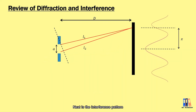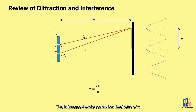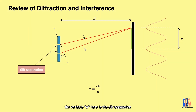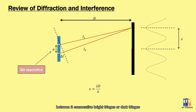Next is the interference pattern. We also have a similar formula and we do not consider the angle of diffraction in this topic. This is because the pattern has a fixed value of x — every dark and bright fringe has the same width. From the formula, the variable a here is the slit separation, which is different from the formula in diffraction pattern. Besides that, x represents the distance between two consecutive dark fringes.